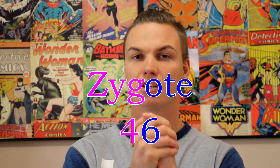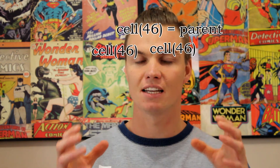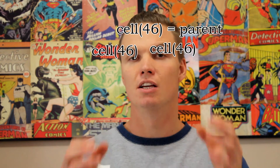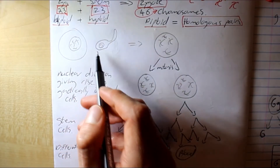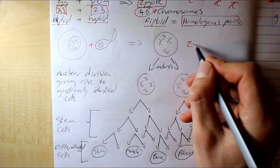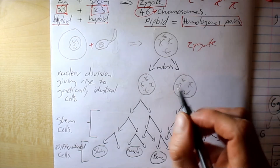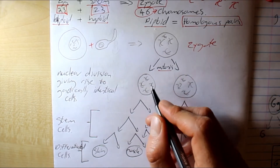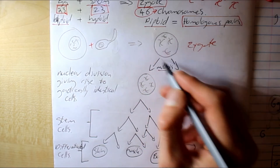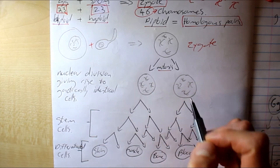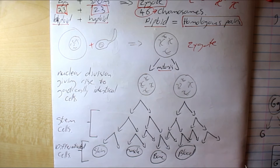The zygote has 46 chromosomes, and as the cells start to develop and multiply, every single cell has 46 chromosomes. This is because these cells divide through mitosis, which gives an exact identical copy of the parent cell. So one cell becomes two completely identical cells. This zygote divides through mitosis, producing identical copies of the original cell — meaning they have the exact same DNA and chromosomes. Nuclear division gives rise to genetically identical cells.